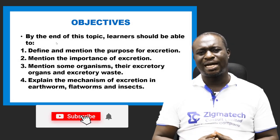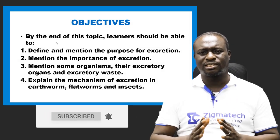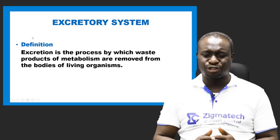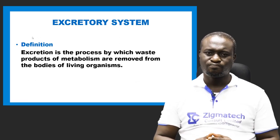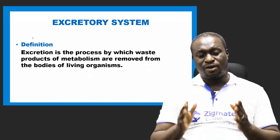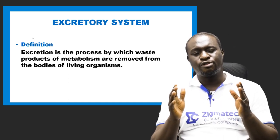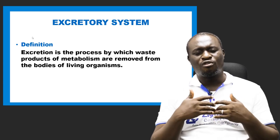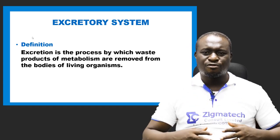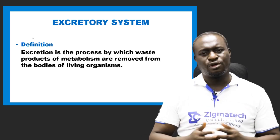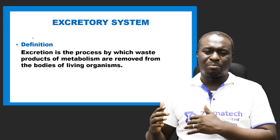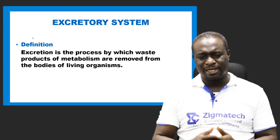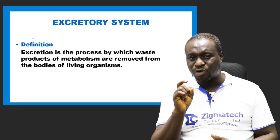Let us begin with the definition of excretion. Excretion is simply the removal of metabolic waste products. You can say it is the removal of waste products of metabolism from the bodies of living organisms, or it is the process by which living organisms remove waste products of metabolism from the body.